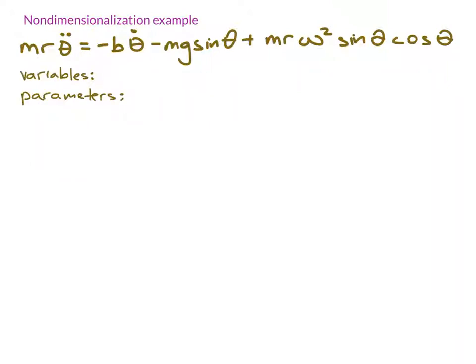To start, we identify the variables. They are theta and t, and then we identify the parameters. We have m, we have r, we have b, we have g, and we have omega.